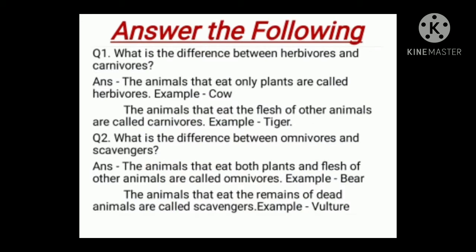Answer the following. Question number 1: what is the difference between herbivorous and carnivorous? Answer: the animals that eat only plants are called herbivorous. Example: cow. The animals that eat the flesh of other animals are called carnivorous. Example: tiger.